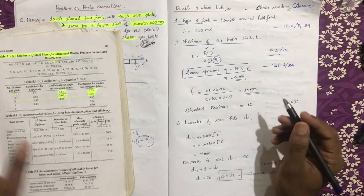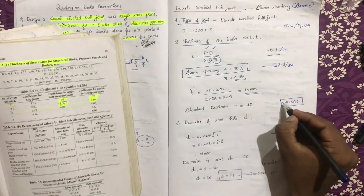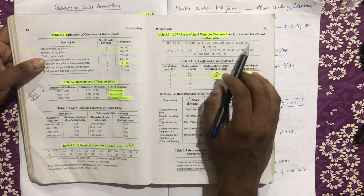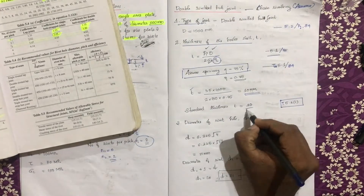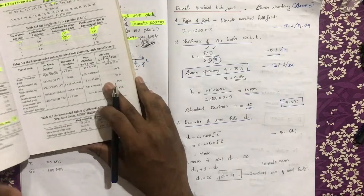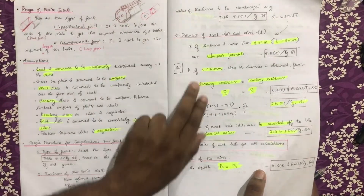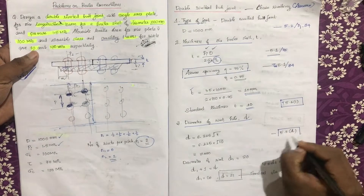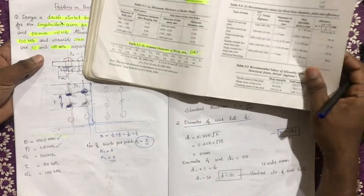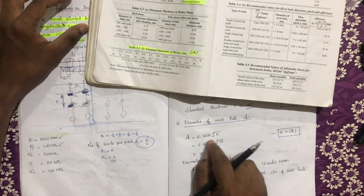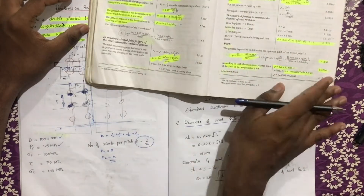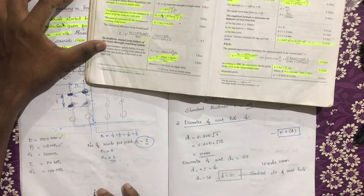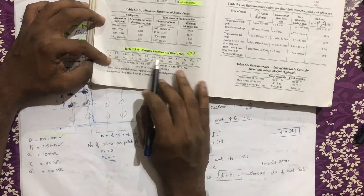From table 5.3c, we standardize the next step. The rivet diameter d is calculated as 6 times the square root of 25, from equation 5.11, giving d equal to approximately 21 mm. We then standardize to a nominal diameter d1 equal to 20 mm.